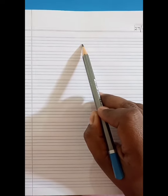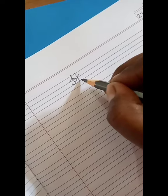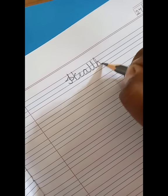After writing the date, write the heading on the first line. Our heading for today is healthy food. H-E-A-L-T-H-Y. Healthy food.